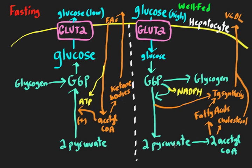In the well-fed state, pyruvate goes into the mitochondria, gets converted to acetyl-CoA, and under these conditions it's used to make fatty acids and cholesterol in the cytosol — that's fatty acid biosynthesis. Triglycerides are made by linking fatty acids to a glycerol backbone, where the glycerol comes from the glycolytic pathway. Then, throwing in some cholesterol and packaging it all together with some protein produces VLDL, which delivers those triglycerides ultimately to tissues like adipose, which pick up the fatty acids and store them as fat.